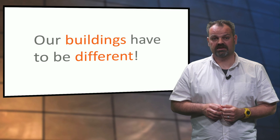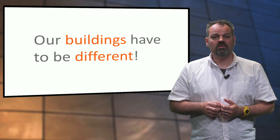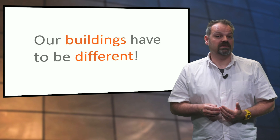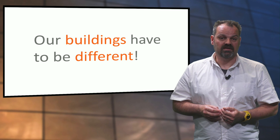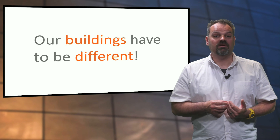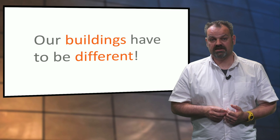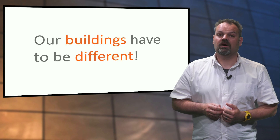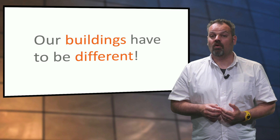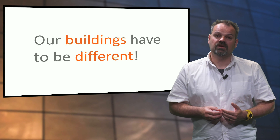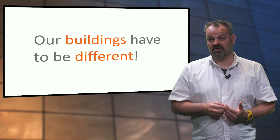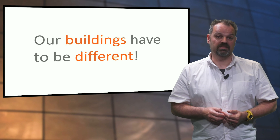Our buildings have to be different. Today we have explained the differences between consumer goods and our built environment — they vary in size and the time being used. We have already mentioned a couple of problems and talked about strategies in order to design our future buildings. Over the next weeks, we will share first ideas towards this challenging future of circularity in the built environment.